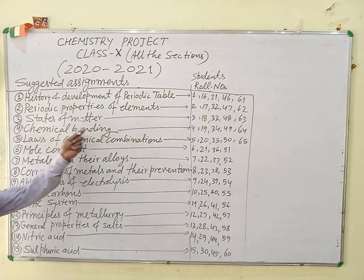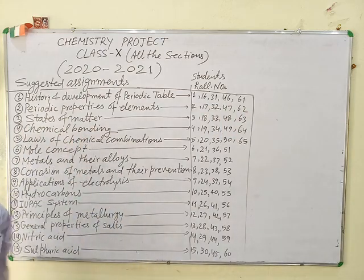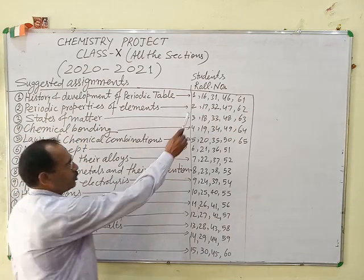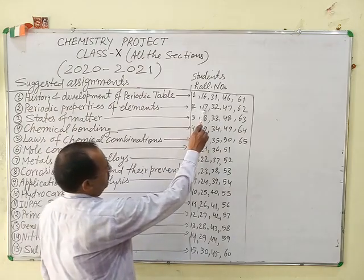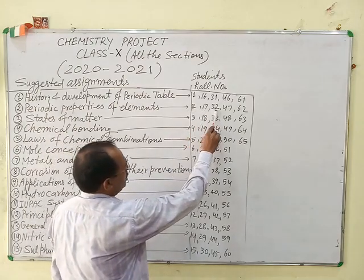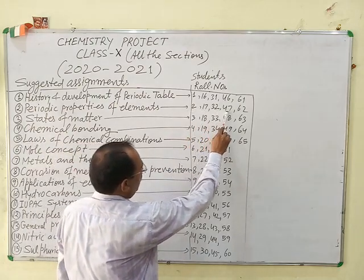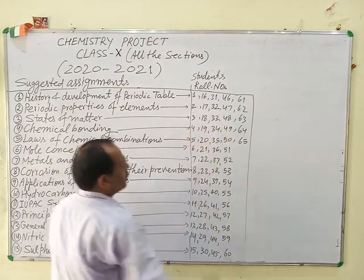Periodic properties of elements are assigned to roll numbers 2, 17, 32, 47 and 62.